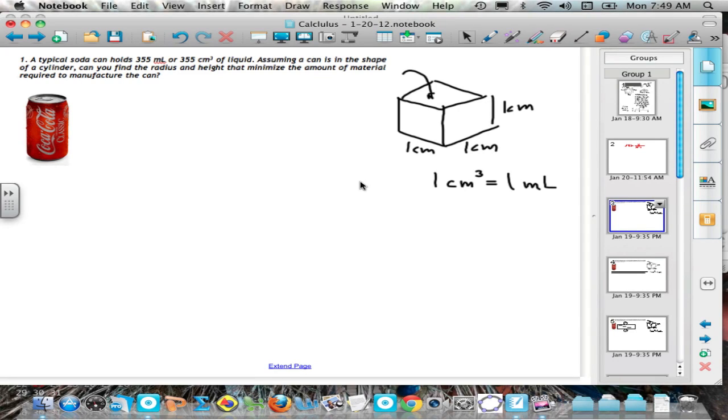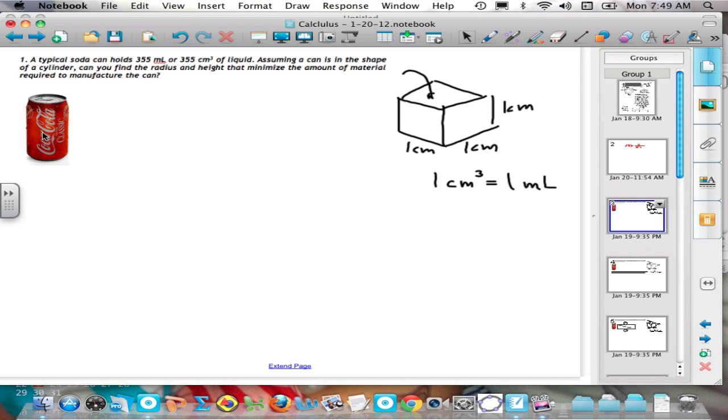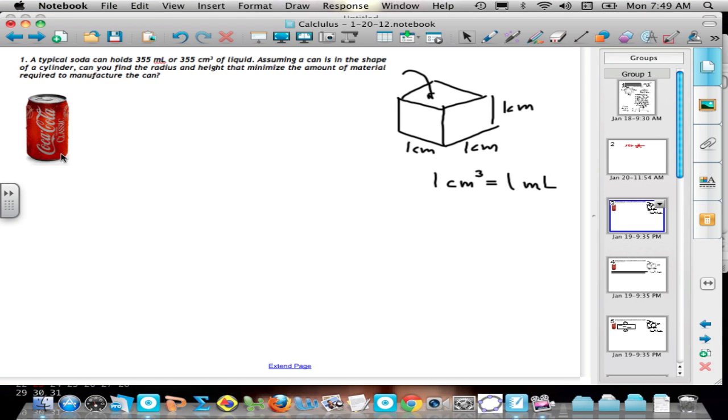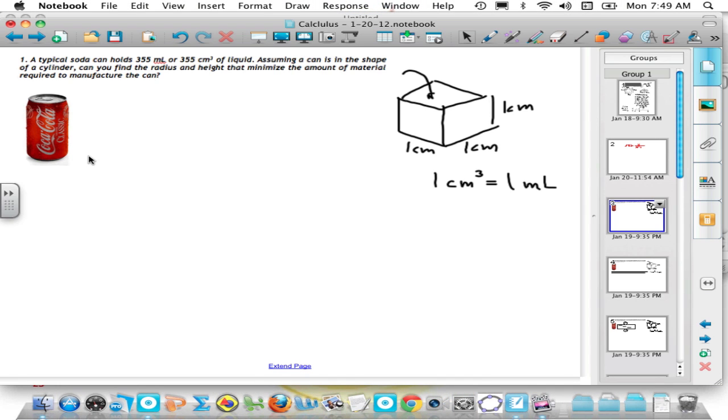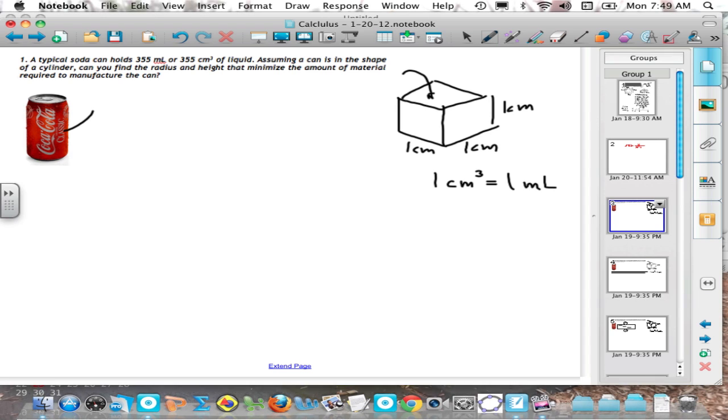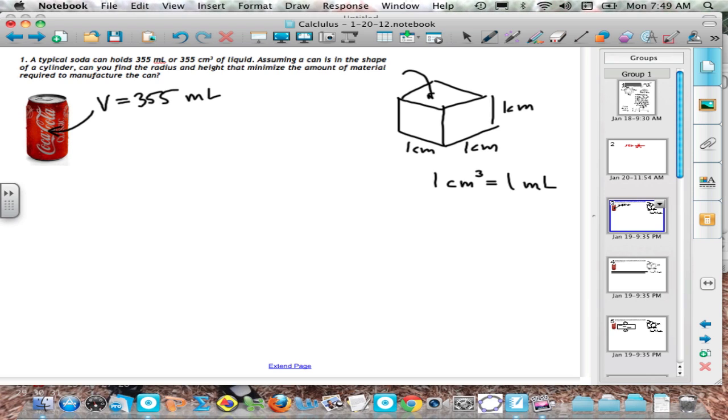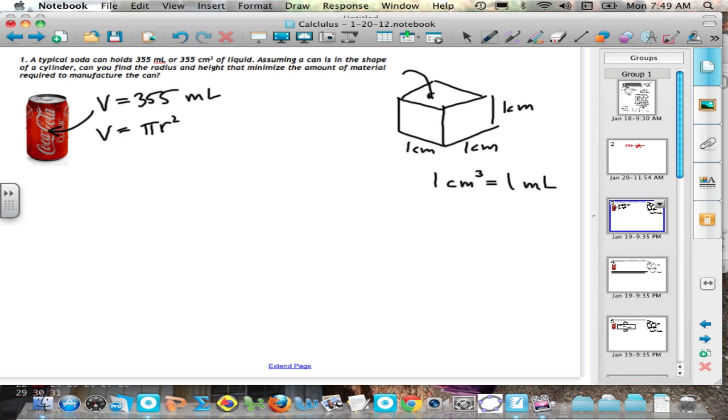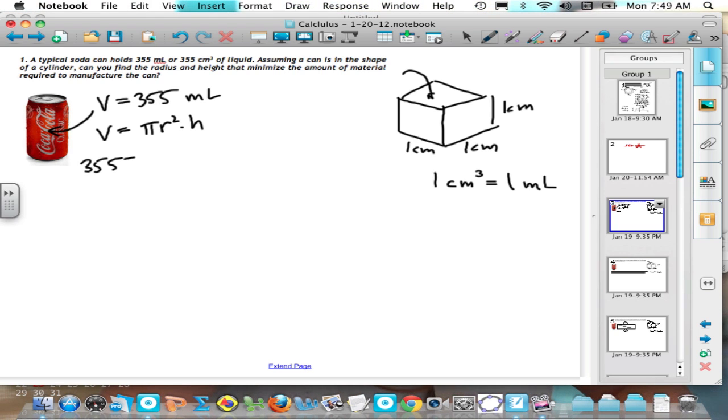All right, our task is to figure out basically what is the minimum amount of material or surface area that's going to be required to build this can that contains 355 milliliters, which is also 355 cubic centimeters. So we know the volume of this here. The volume is 355 milliliters, and the volume of any cylinder is the area of the base, pi r squared, because it's a circle, times height. So what we really have here is 355 is pi r squared h.